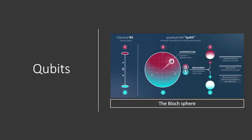Qubits can be in the state of one or zero, or unlike a bit, they can be in a superposition of one and zero, where they can be any probability or amplitude between one and zero at the same time. And this is how data is encoded in a quantum computer.